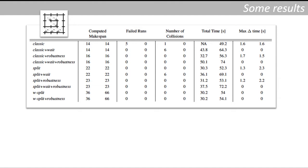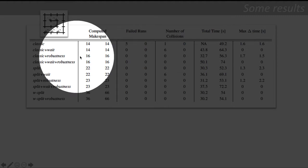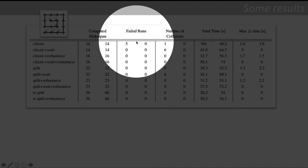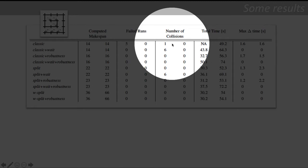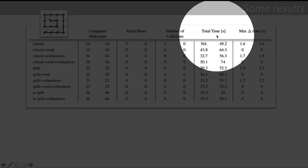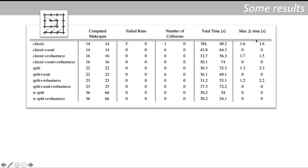This is the result for one of these maps. It's very similar for other maps. The rows describing various models that we compare and the columns describe the computed makespan for that model, the number of failed runs. We run each plan five times. Then we have the number of collisions that are non-fatal, a total time which is the real makespan, how much time we need to execute the plan, and finally the max delta time which is describing desynchronization of the plan. The max delta time is simply the distance in time between the first robot finishing the plan and the last robot finishing the plan. So if this distance is zero it means that the plans are perfectly synchronized. If it's non-zero it means that the plans are desynchronized.